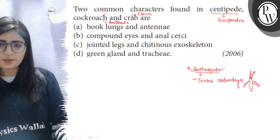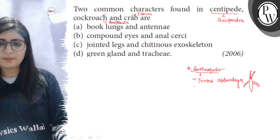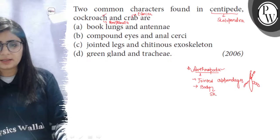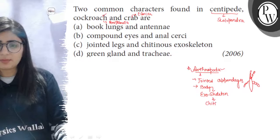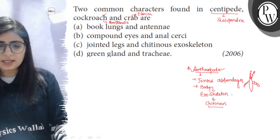Such jointed structures or appendages is a very peculiar feature of phylum Arthropoda. And the second feature is that body is covered with a skeleton. As this skeleton is present on outer side of the body or it is non-living, then it is called exoskeleton, and this exoskeleton is chitinous. It means it is composed of a polysaccharide chitin. So, presence of a chitinous exoskeleton is also a very peculiar feature of phylum Arthropoda.